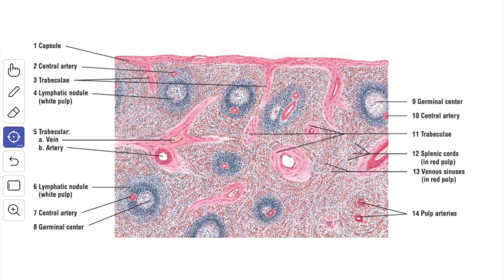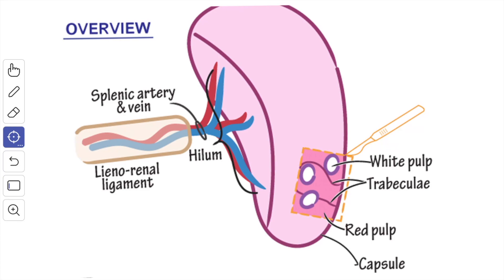The fibroblasts, called reticular cells, and macrophages are also present in relation to the reticulum. The interstices of the reticulum are pervaded by lymphocytes, blood vessels, blood cells, and macrophages. On examination with the unaided eye, the interior of the spleen shows round white areas known as white pulp, surrounded by the red matrix known as the red pulp.